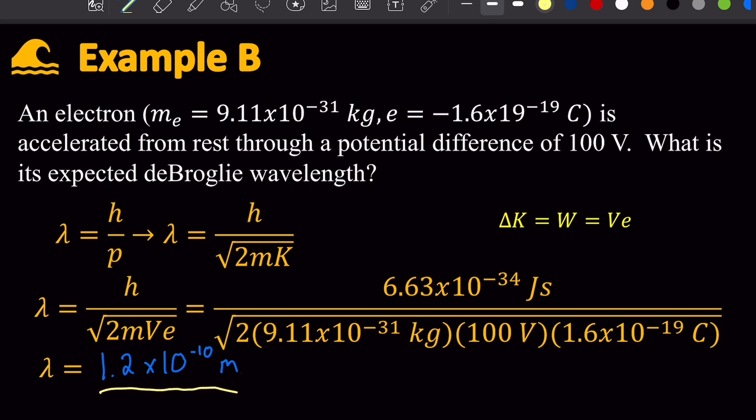Now this number is very small, but compared to the size of an atom, this is actually a huge answer. An atom might have a radius of around this much. So the wavelength of an electron is very significant compared to the size of the atom that it's in.